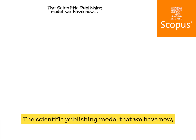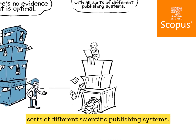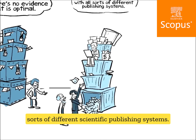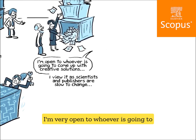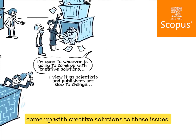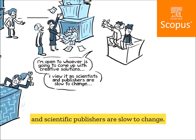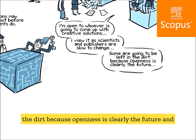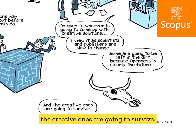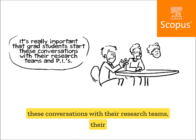The scientific publishing model we have now — there's no evidence it is optimal. We need to experiment with all sorts of different scientific publishing systems. Corporations may figure that out before governments do. Scientists and scientific publishers who are slow to change are going to be left in the dirt, because openness is clearly the future, and the creative ones are going to survive.